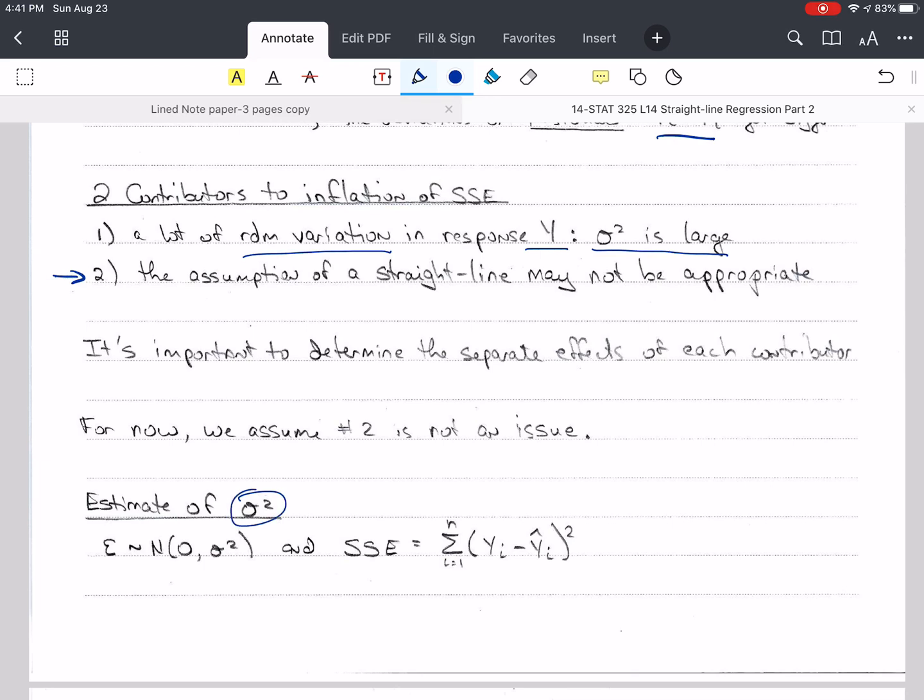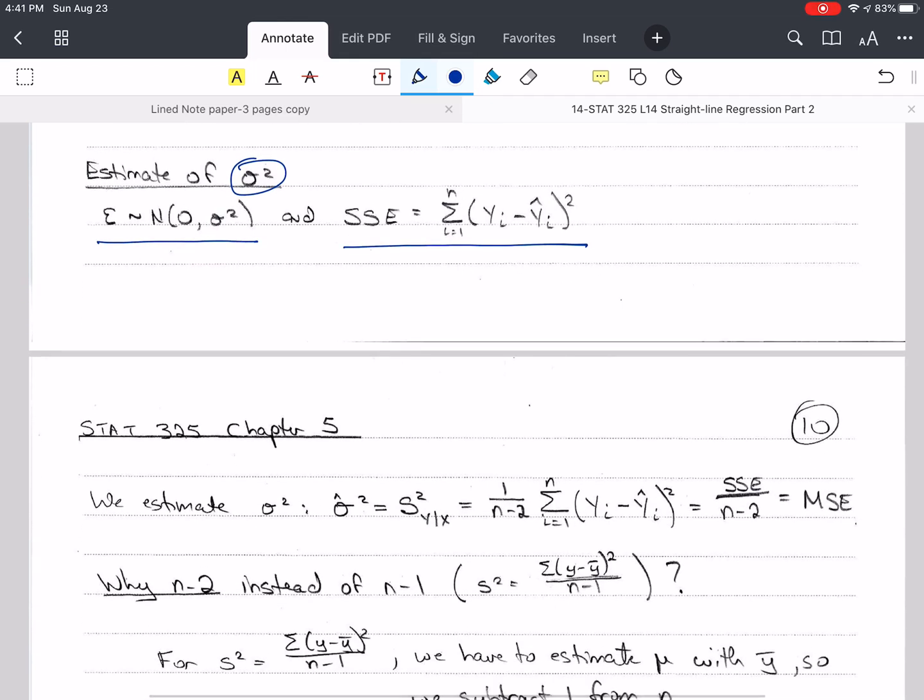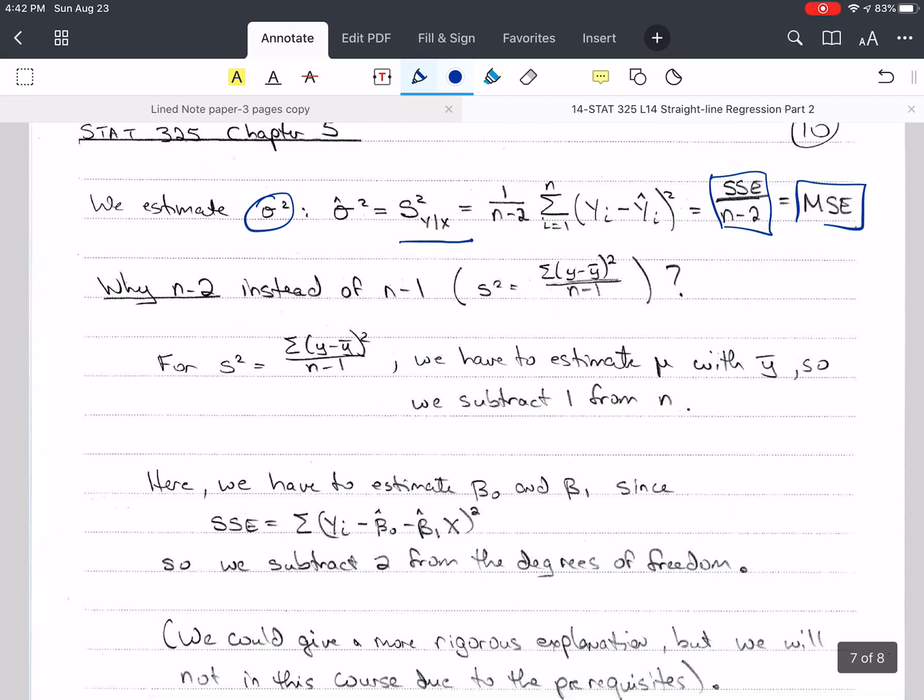Now, we want to estimate sigma squared, that constant variance for each value of x. And we remember that the error is distributed as a normal with zero mean and sigma squared as the variance. And remember that SSE is our sum of squared errors. So we're going to estimate sigma squared using S squared sub y given x. So usually I say the sub first and then the square. So S sub y given x squared. And that's going to be 1 over n minus 2 times the sum of squares. We call this the mean square error. And so the mean square error, or MSE, is what we use to estimate the variance.